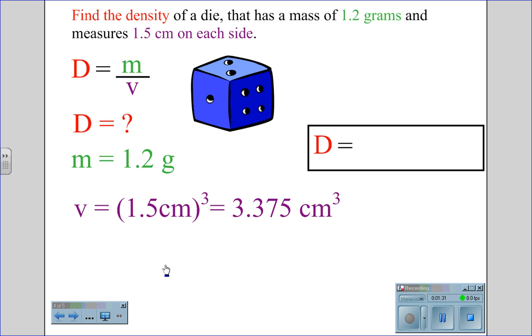To find the density of a die that has a mass of 1.2 grams and measures 1.5 centimeters on each side, you take the original equation, D equals M divided by V. D is what we are looking for. M is the mass, 1.2 grams.